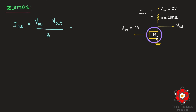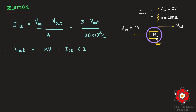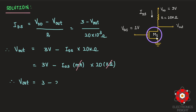Substituting the known values: VDD = 3 V and R = 20 kΩ. If IDS is expressed in milliamps and resistance in kilohms, the powers of 10 cancel. Therefore, the output voltage expression becomes Vout = 3 − 20·IDS.